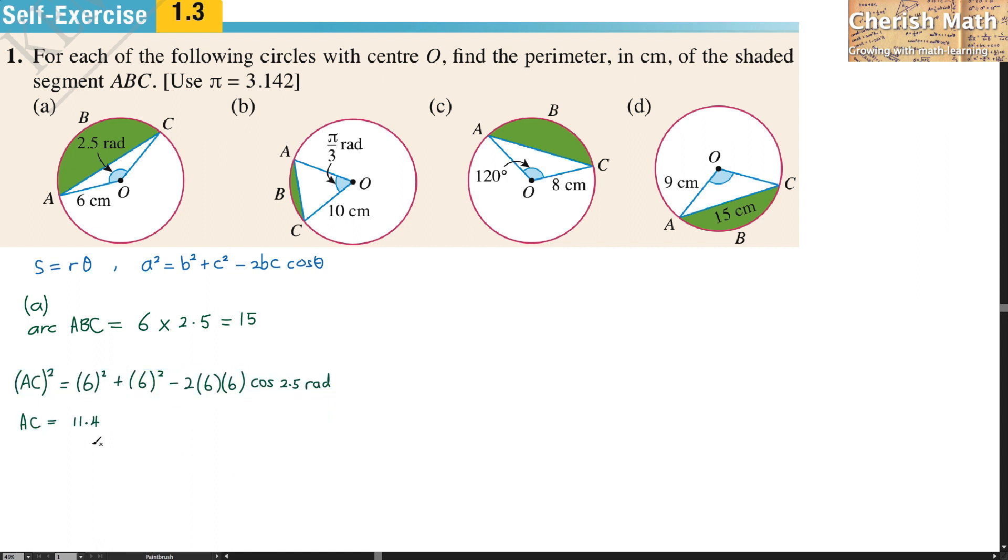To find out the perimeter of this shaded region, I will be using the arc ABC which is 15 cm plus the chord AC that I got here as 11.4. And the result that I have here is 26.4 cm. And I solve it.